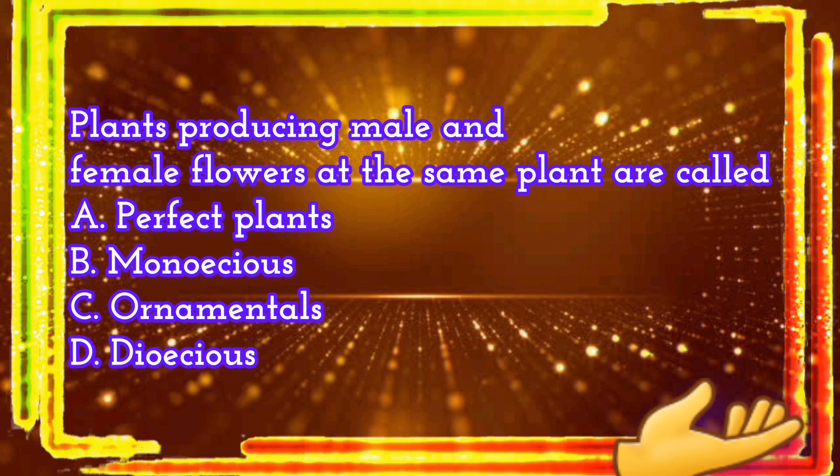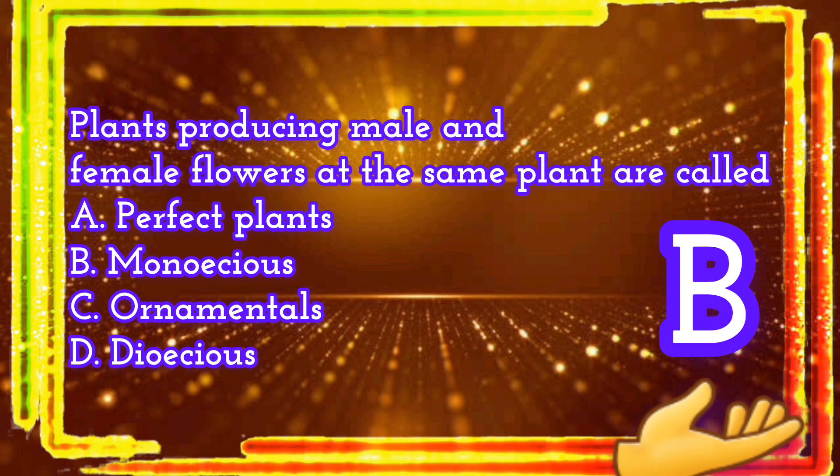Plants producing male and female flowers on the same plant are called. A. Perfect plants. B. Monaceous. C. Ornamentals. D. Diaceous. The correct answer is letter B. Monaceous.